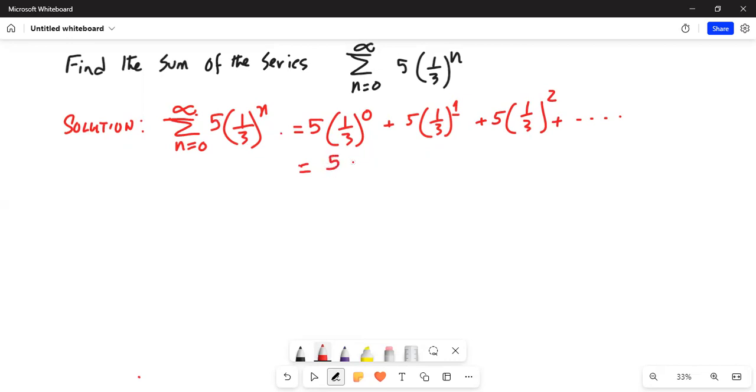So, it is 5 plus 5 times 1 third, exponent 2 plus and so on.